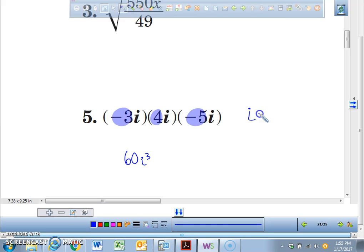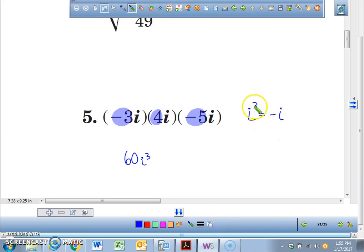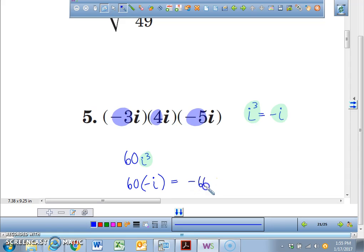But by the way, when you guys look at your chart, what is i cubed that actually equals? Negative i. Negative i. So I need you guys to understand, whenever you see something like i cubed, I need you to replace it with negative i. So right here, we're going to replace this with a negative i. This is going to be 60 times a negative i. And our final answer is negative 60i. This is your simplified answer.